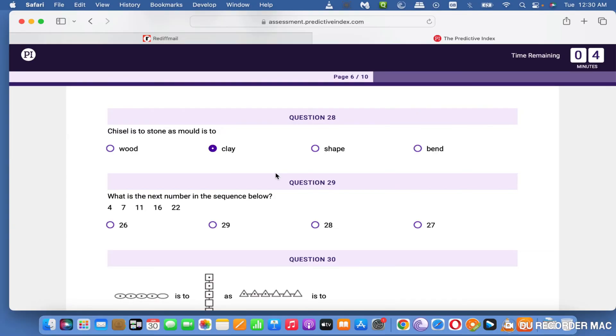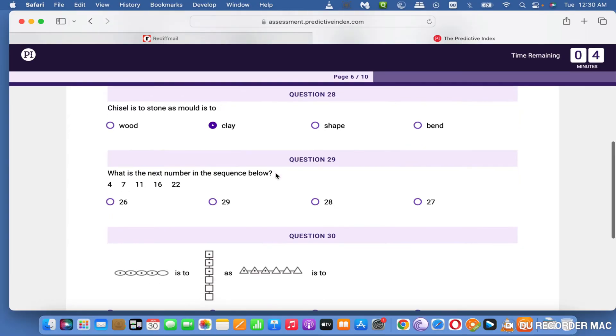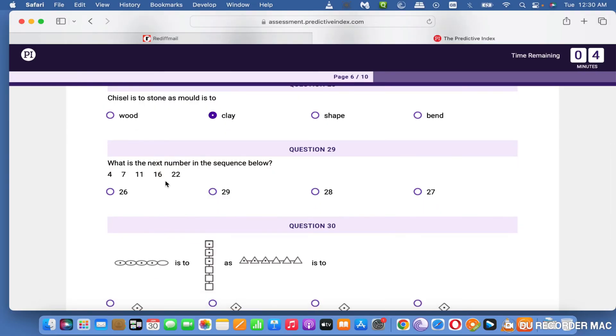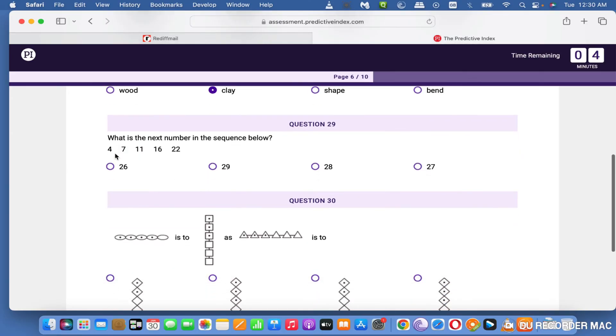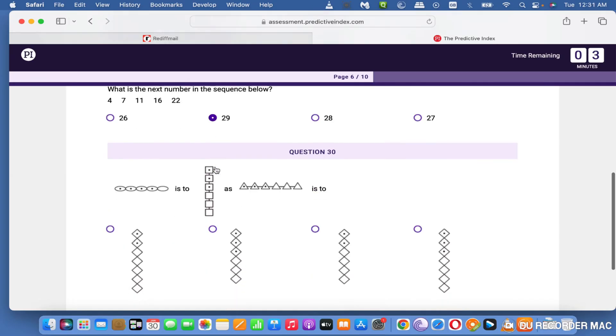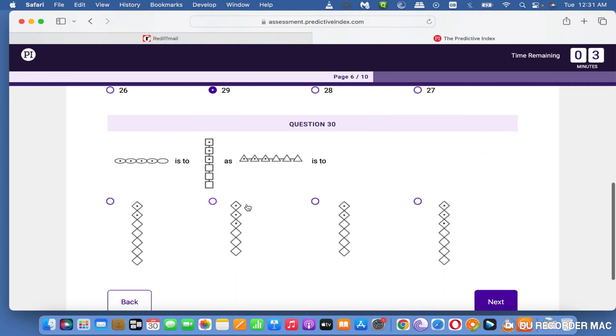The next one is 4, 7, 11, 16, 20, 21. It's adding 3 plus 4 plus 5 plus 6 plus 7, so the answer is 29. You need to understand the pattern and then the answer will click in your mind easily.